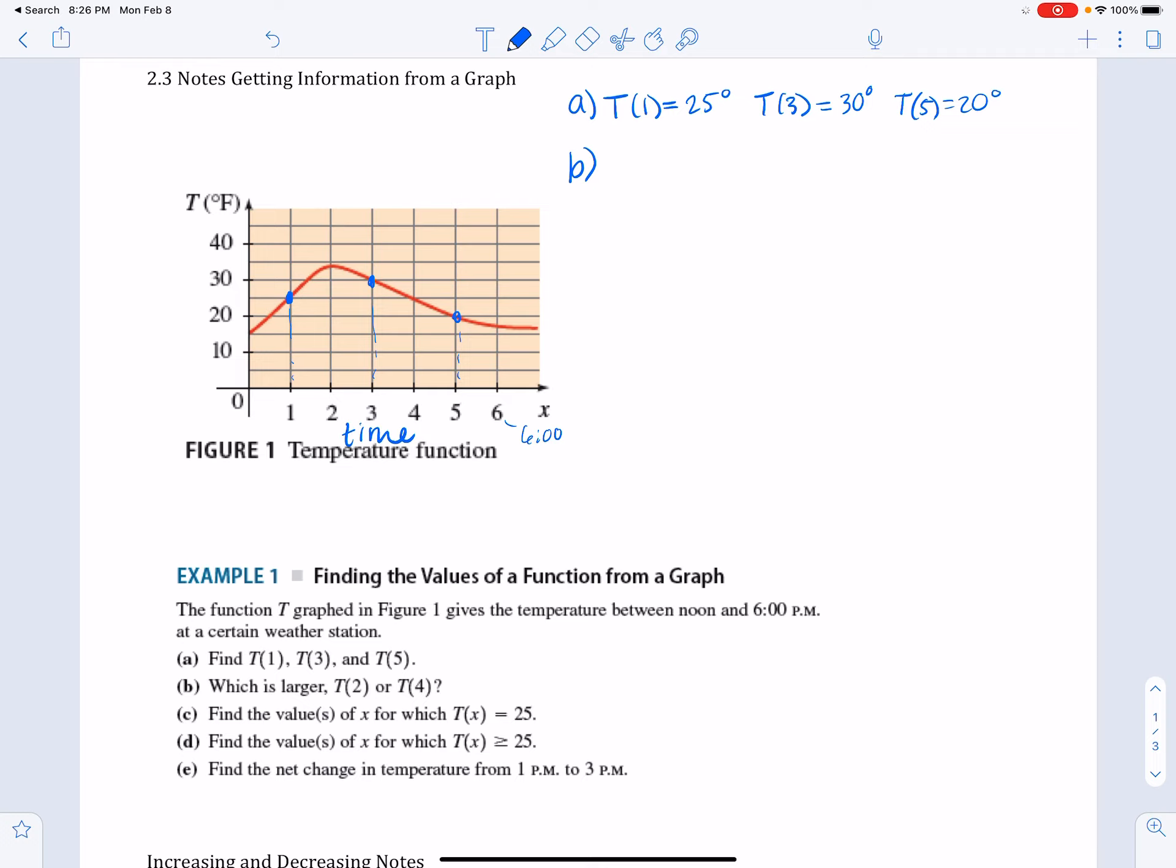Part B: which is larger, T(2) or T(4)? Okay, so we can just go look at T(2), that's this value right here, and T(4). We can just tell that T(2) is greater because T(2) is at 35 and T(4) is at about 25. So we can write T(2) is greater than T(4), and that's all it's asking for.